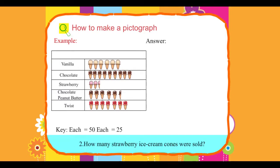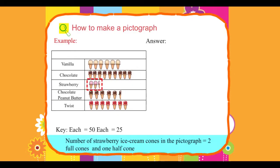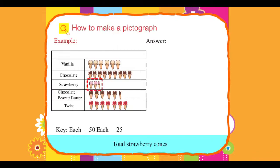2. How many strawberry ice cream cones were sold? Number of strawberry ice cream cones in the pictograph equals 2 full cones and one half cone. Total strawberry cones equals 2 into 50 plus 1 into 25 equals 100 plus 25 equals 125. 125 strawberry ice cream cones were sold.